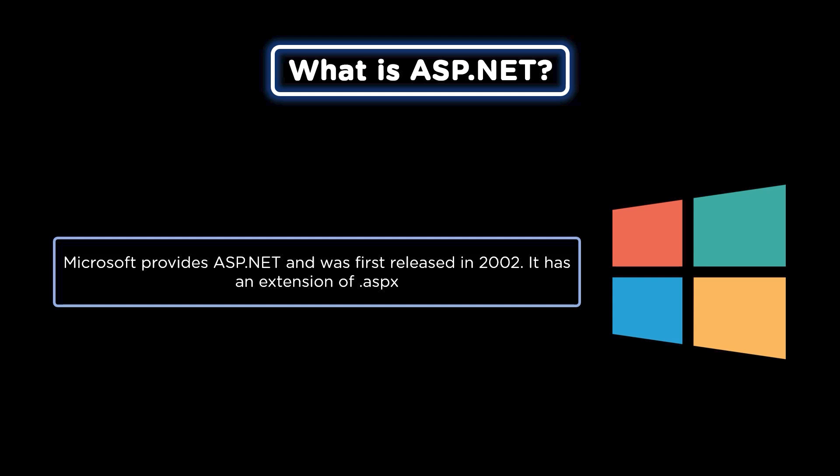ASP.NET consists of a large number of controls such as text boxes, buttons, and labels for assembling. It produces interactive, data-driven web applications on the internet, which helps to build websites and web applications in a better and colorful way.